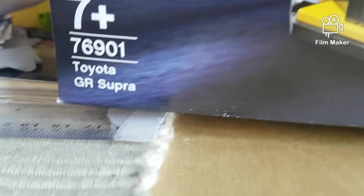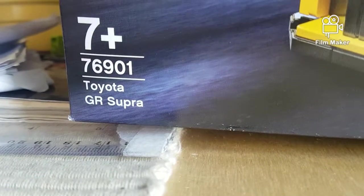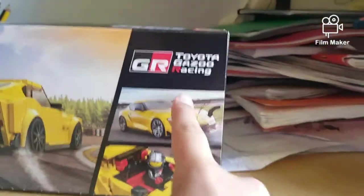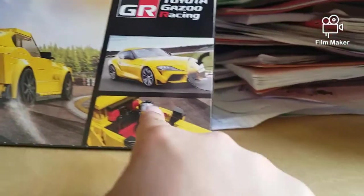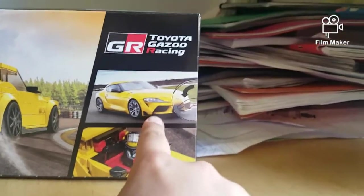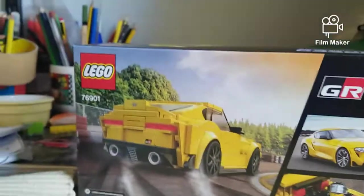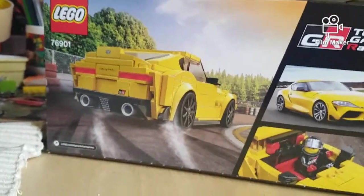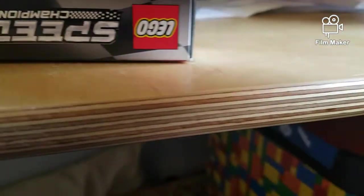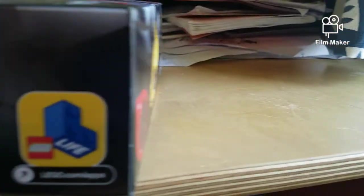This set is 76901, ages 8 plus. On the back we have once again the GR logo, a picture of the GR Supra in real life, an inside shot of the cabin, and a nice picture of the LEGO one drifting. On the side of the box we've got just a nice picture, of course we've got a 1 to 1 scale and an advert for LEGO life.